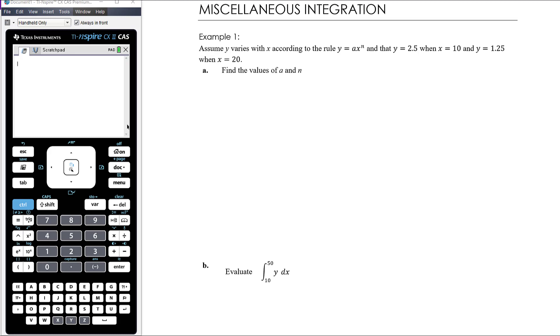Let's put the first point in. When x is 10, y is 2.5, so that's going to give us 2.5 equals a times 10 to the power of n. Then the second bit of information, y equals 1.25 when x equals 20, so 1.25 equals a times 20 to the power of n.